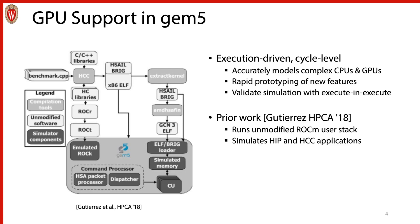The prior work built the GPU model in GEM5 and got the interface working with the ROCm user stack, and was able to get the HIP and HCC applications up and running. If you look in the top left, you see your benchmark written in something compatible with HIP or HC. It gets compiled using HCC, which compiles and adds in the GPU code. There's then a diverging code flow with the ROCk kernel driver that's emulated in GEM5, and the GPU code itself gets extracted and loaded in the simulator. For more information about the GPU model in GEM5, Matt and Tony have a talk in the GEM5 workshop about it.